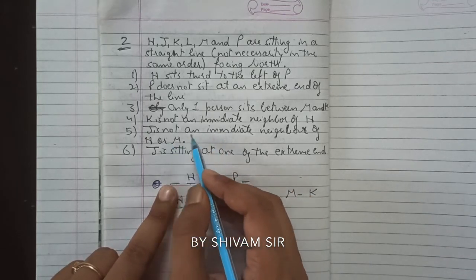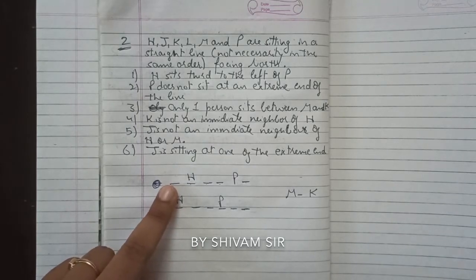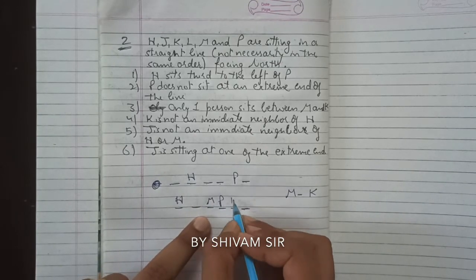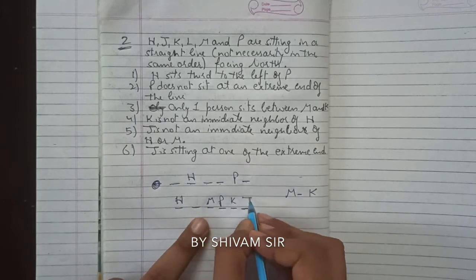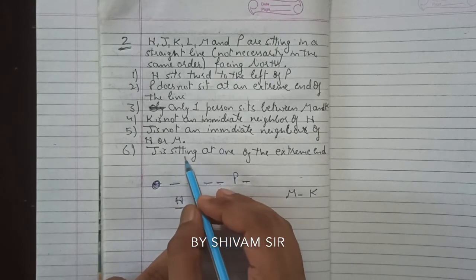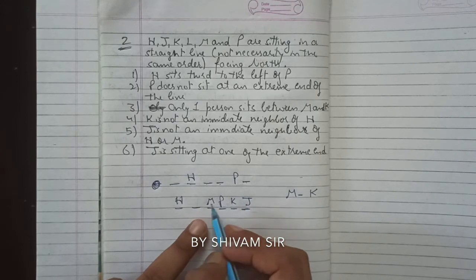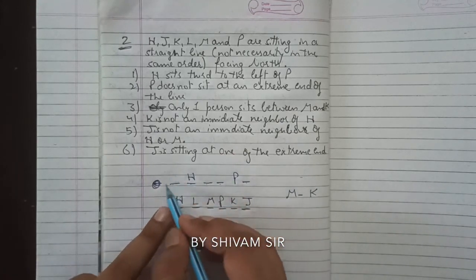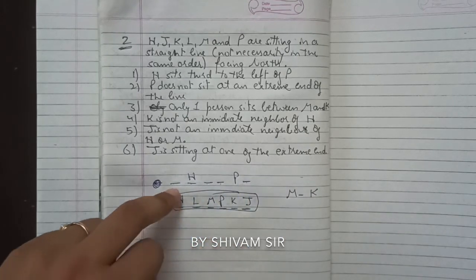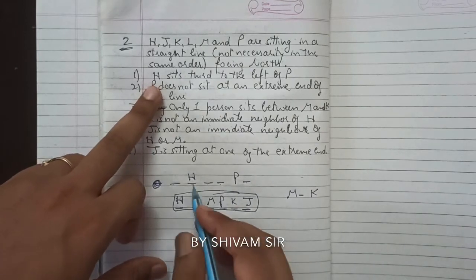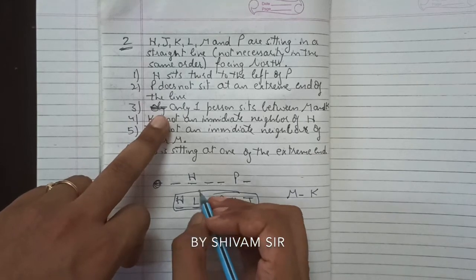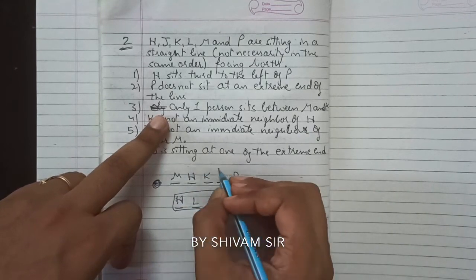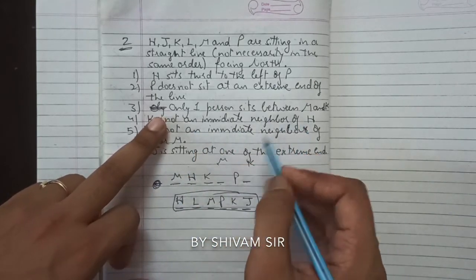J is not an immediate neighbor of either H or M. If we place M here, K will be here. J cannot be adjacent to H or M, so J goes to an extreme end. J is sitting at one of the extreme ends. The remaining person L fills the leftover position. So with this possibility the arrangement would be: H, L, M, P, K, J.